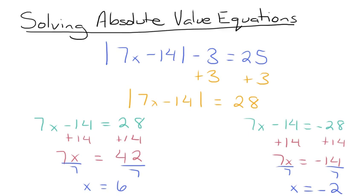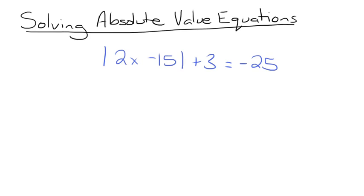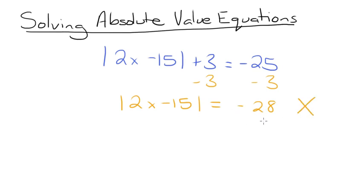Let's consider one problem we might encounter when working with these equations. Take a look at this example: the absolute value of 2x minus 15, plus 3, is equal to negative 25. The first thing we do is subtract 3 from both sides, giving us the absolute value of 2x minus 15 is equal to negative 28. Since absolute value signs always make a number positive, it is not possible to have an absolute value expression equal to a negative number. If you ever encounter this, there are no solutions to the equation.